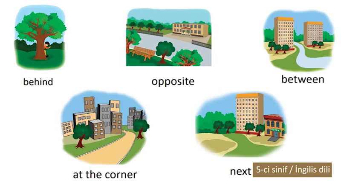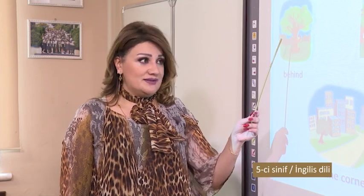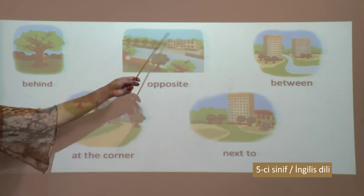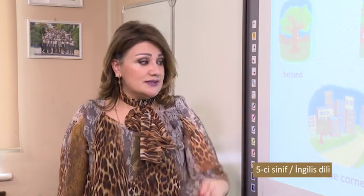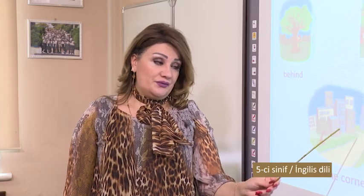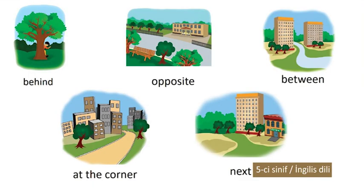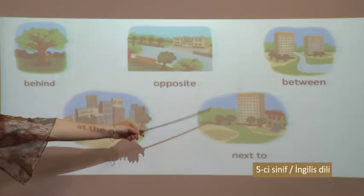Now we have here some prepositions. I'm sure that you know these prepositions from our previous lesson. Behind - behind the tree. Opposite - it means the opposite, the garden, school, opposite the garden or park. Between - between two existing buildings. At the corner - it means that the way ends or finishes. Next to - for example, the board is next to me. There is a chemist next to the building. The house and supermarket are next to each other.